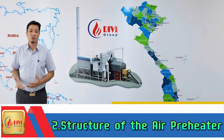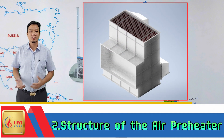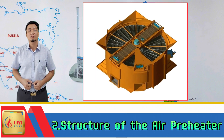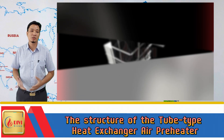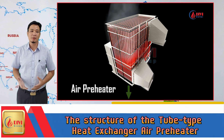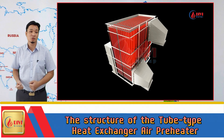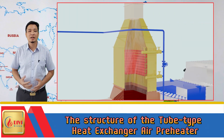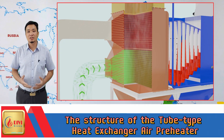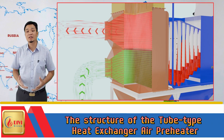Secondly, the structure of the air preheater. The air preheater is divided into two main types: tube-type heat exchanger air preheater and rotary air preheater. In the tube-type heat exchanger, there are two configurations. The first configuration has exhaust inside tubes and air outside tubes — this type has better heat exchange efficiency, but dust tends to accumulate inside the tubes, making cleaning more time-consuming. The second configuration has exhaust outside tubes and air inside tubes; with this design, dust mainly adheres to the outer surface of the tubes and can be easily cleaned with compressed air.